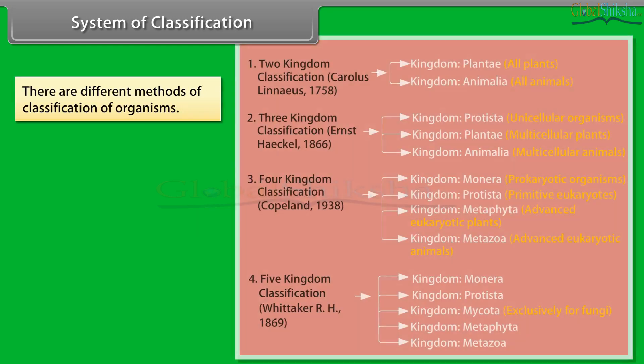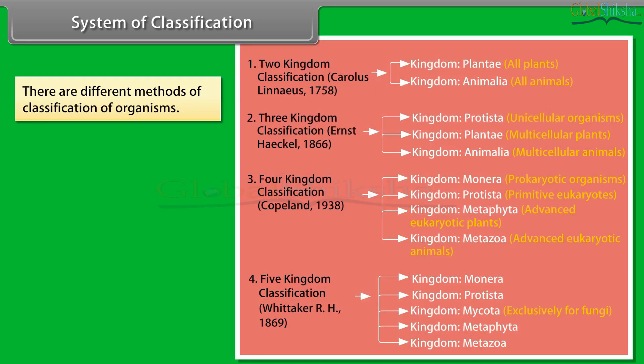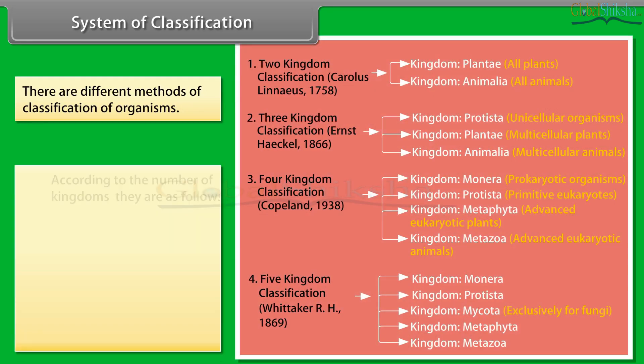Linnaeus recognized that different species could be grouped into broader categories called taxon, based on shared characteristics. There are different methods of classification of organisms. According to the number of kingdoms, they are: two kingdom system, three kingdom system, four kingdom system, five kingdom system, and six kingdom system.